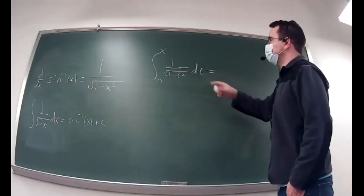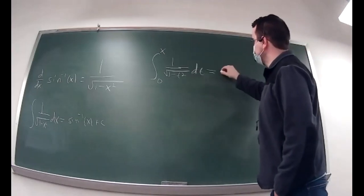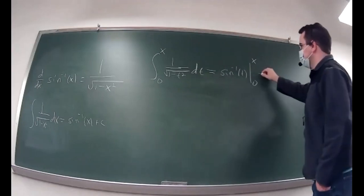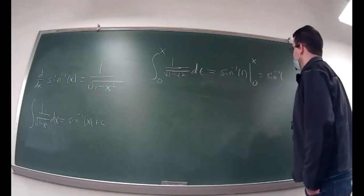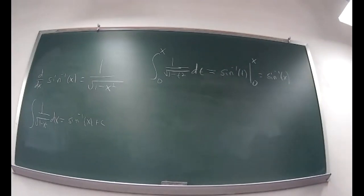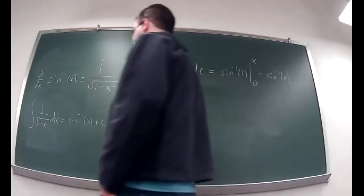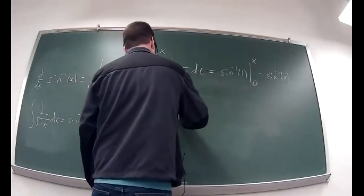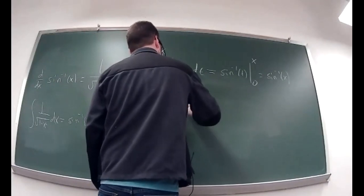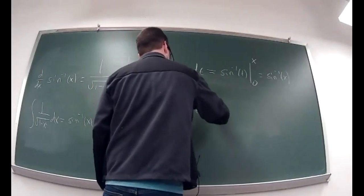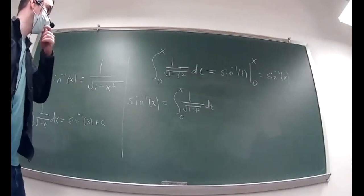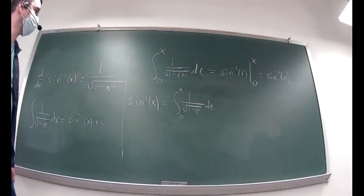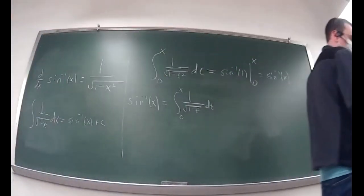You take that antiderivative, which is arc sine of t, and evaluate it from 0 to x. When you plug in x you get arc sine of x, and when you plug in 0 you get 0. So you get this nice integral formula: sine inverse of x equals the integral from 0 to x of 1 over square root of 1 minus t squared dt. I think that's really neat — you can kind of see the Pythagorean theorem in that formula. You can do this for all of the other trig functions.